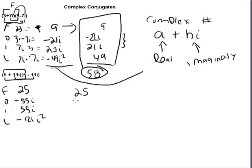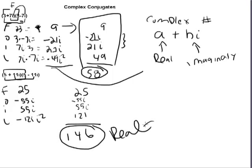So this becomes 25, negative 55i, positive 55i, positive 121. So your final answer is 146. Again, two complex conjugates, when you multiply them, you end up with a real solution.